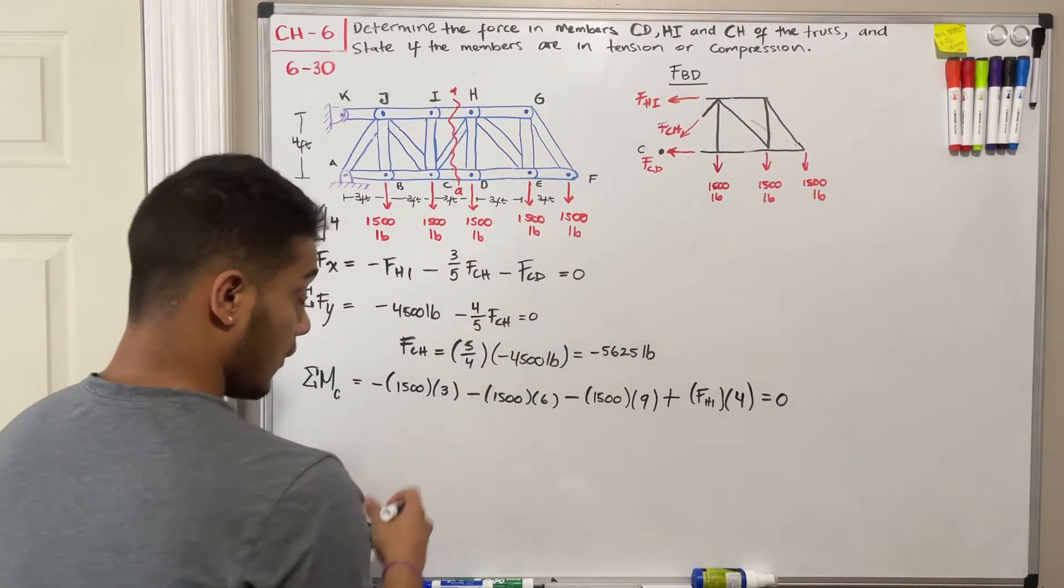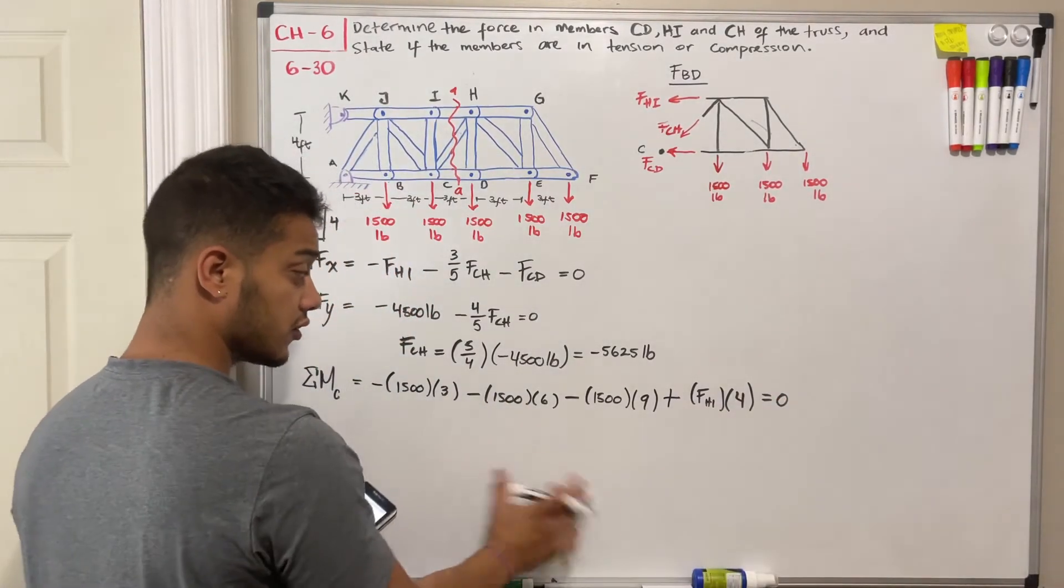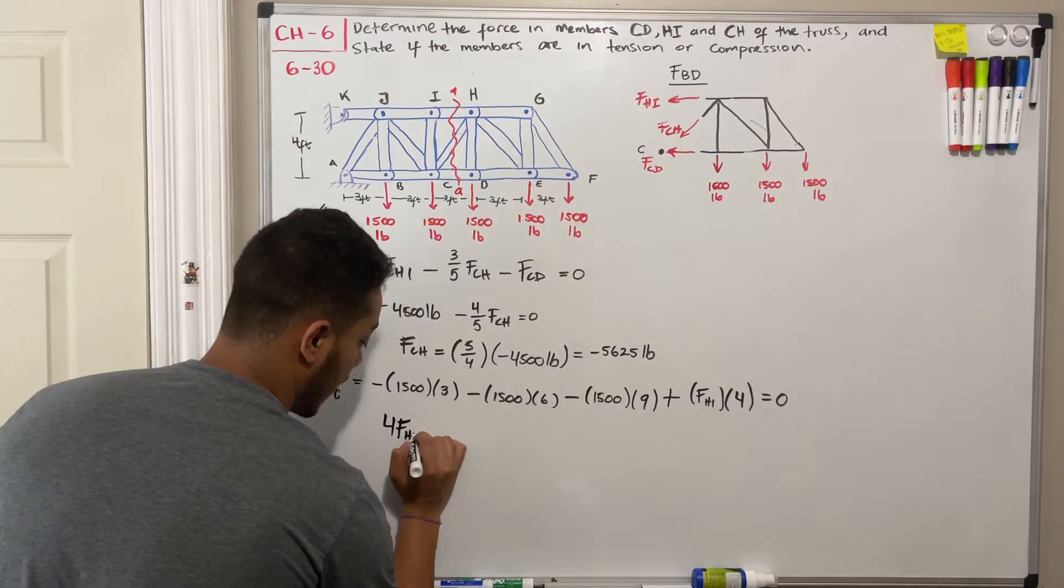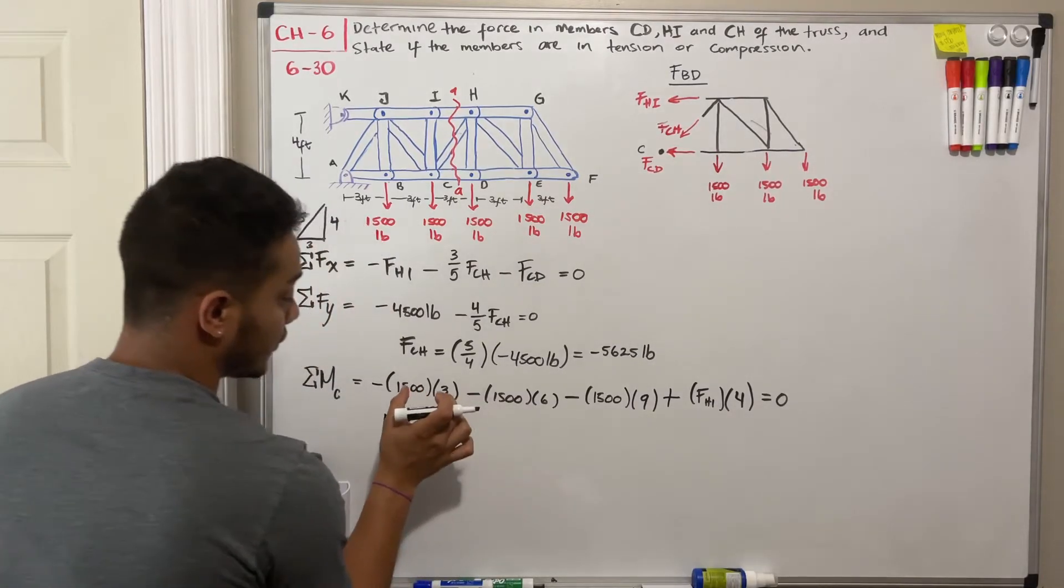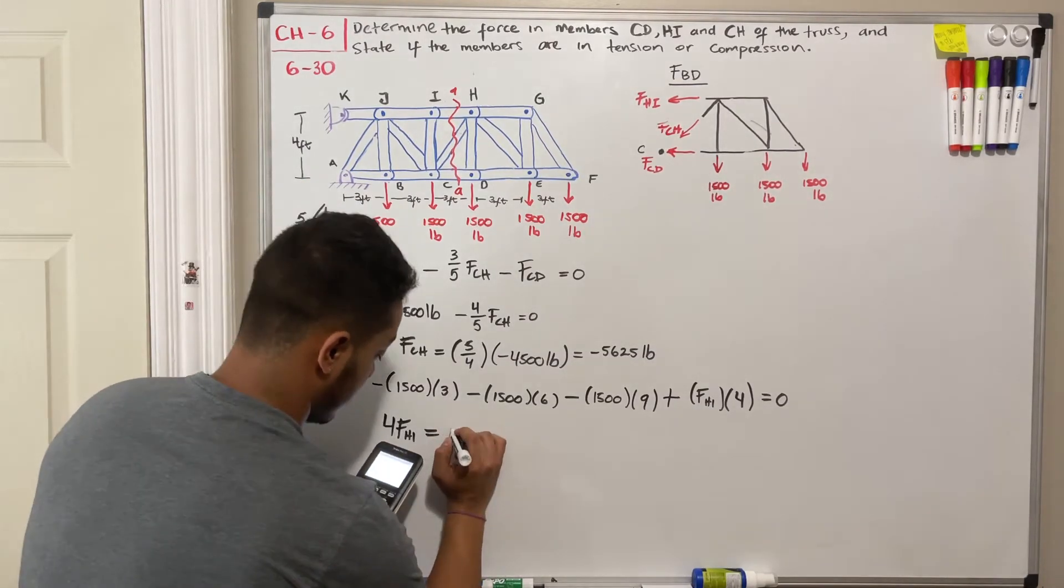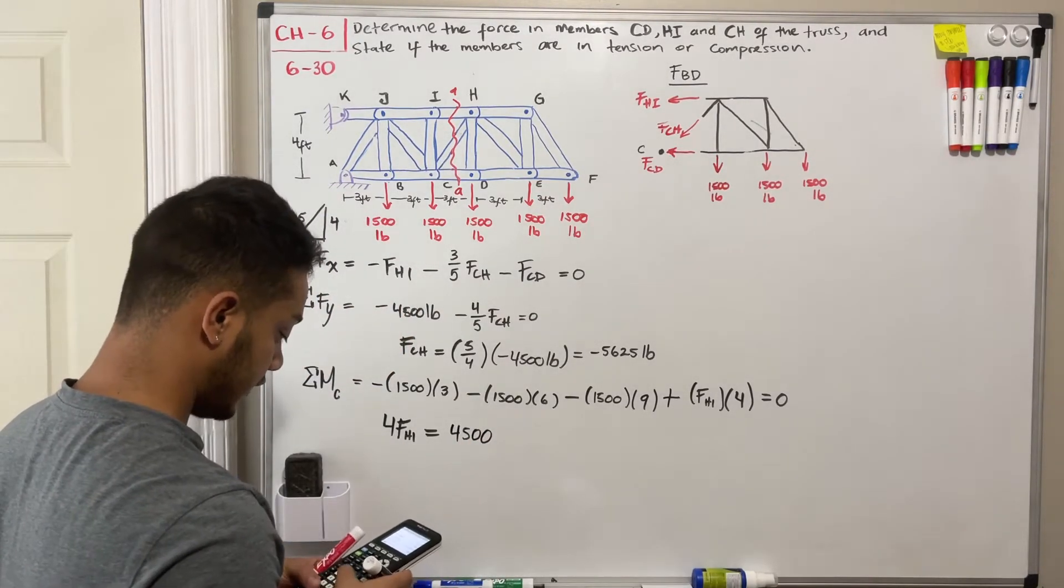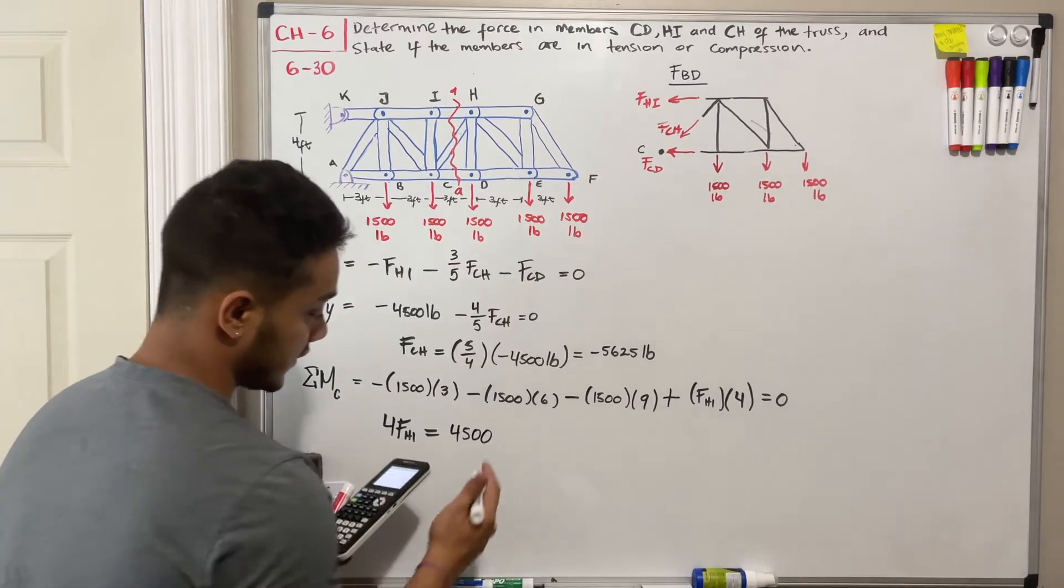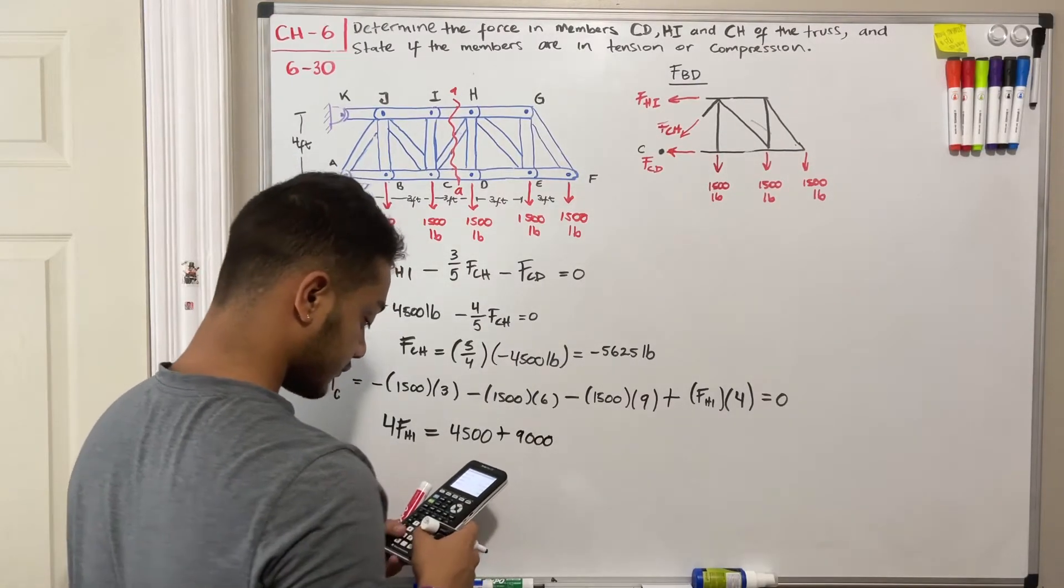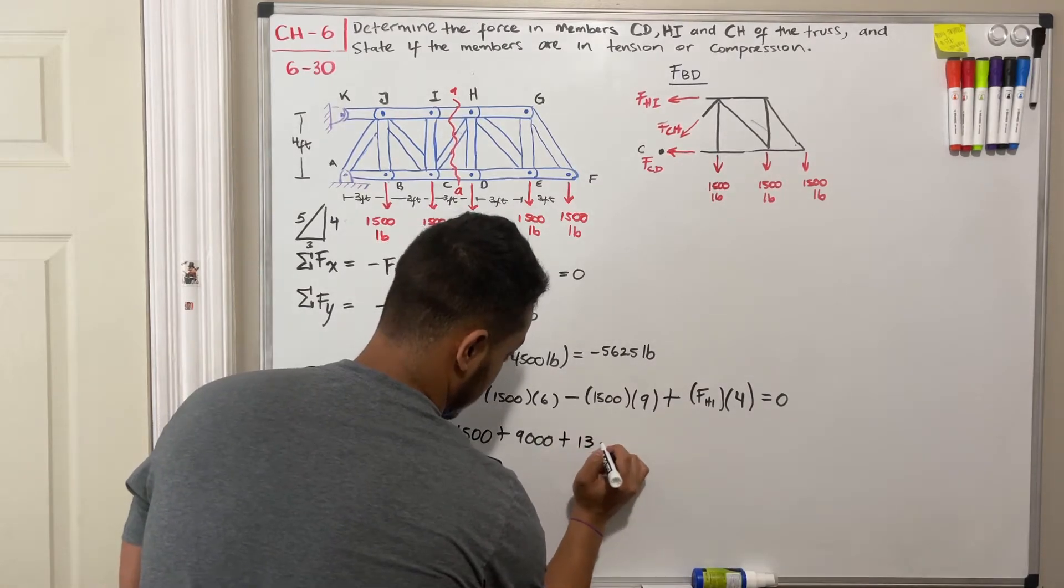Okay. So what I'm going to do is that all these negative forces, I'm going to pass them to the other side and they're going to be positive and we're going to add them all. So we're going to have that 4 times FHI is equal to 1500 times 3. That will give me 4500, 1500 multiplied by 6. That should be equal to 9000 and 1500 times 9 and that's equal to 13500.